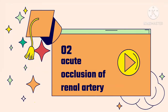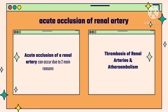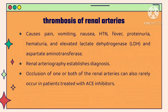Acute occlusion of the renal artery occurs due to two main reasons: thrombosis of renal arteries and atheroembolism. In thrombosis of renal arteries, large renal infarcts cause pain, vomiting, nausea, hypertension, fever, elevated lactate dehydrogenase and aspartate aminotransferase, hematuria, and proteinuria.